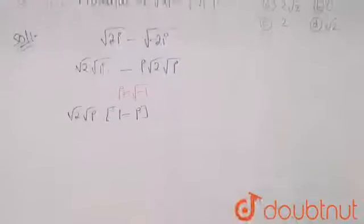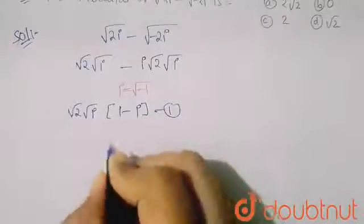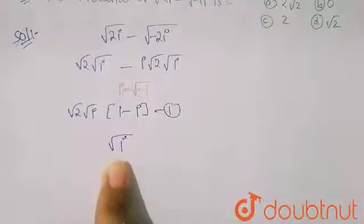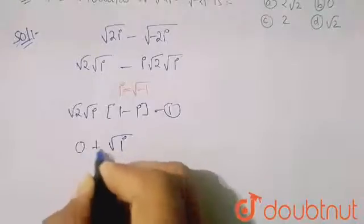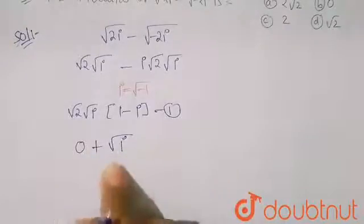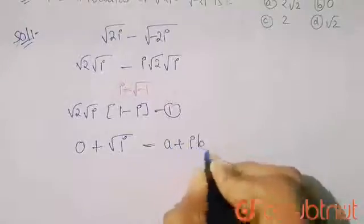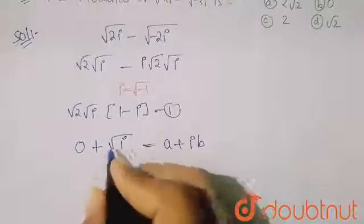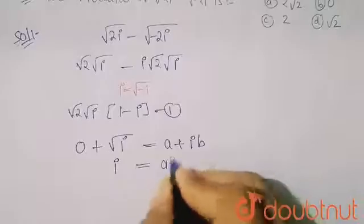Now for finding the value of √i, since we don't have it directly, consider √i as a complex number. Write √i = a + ib. Squaring both sides: on the left we get i, and on the right we get a² + 2abi + (ib)².